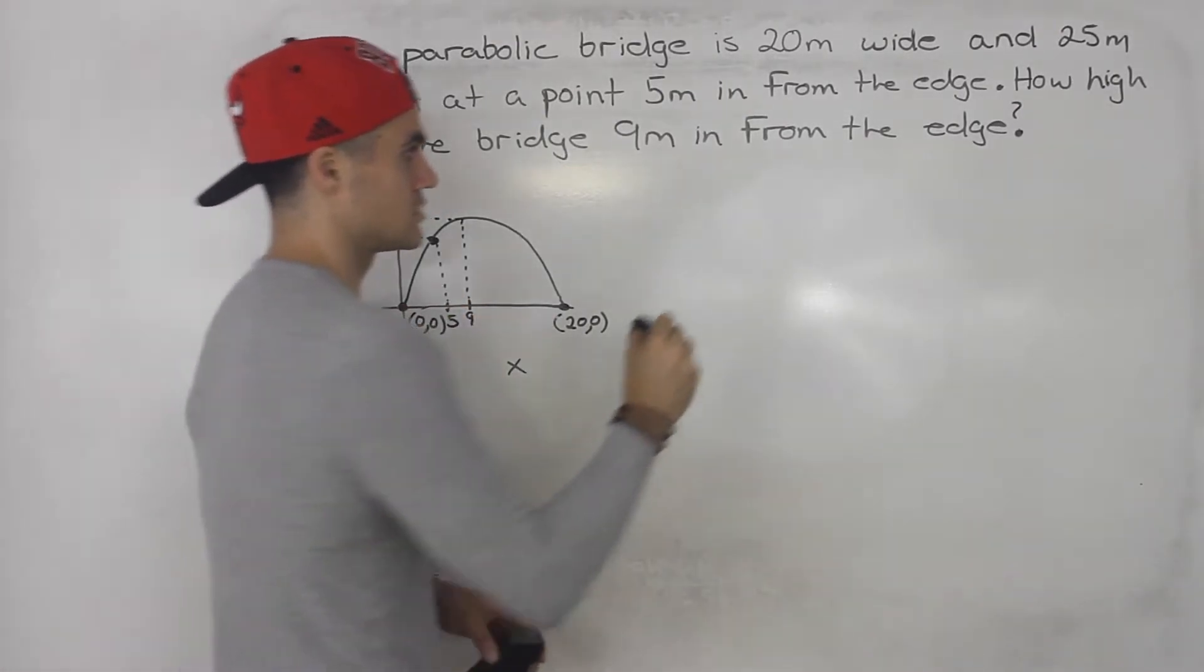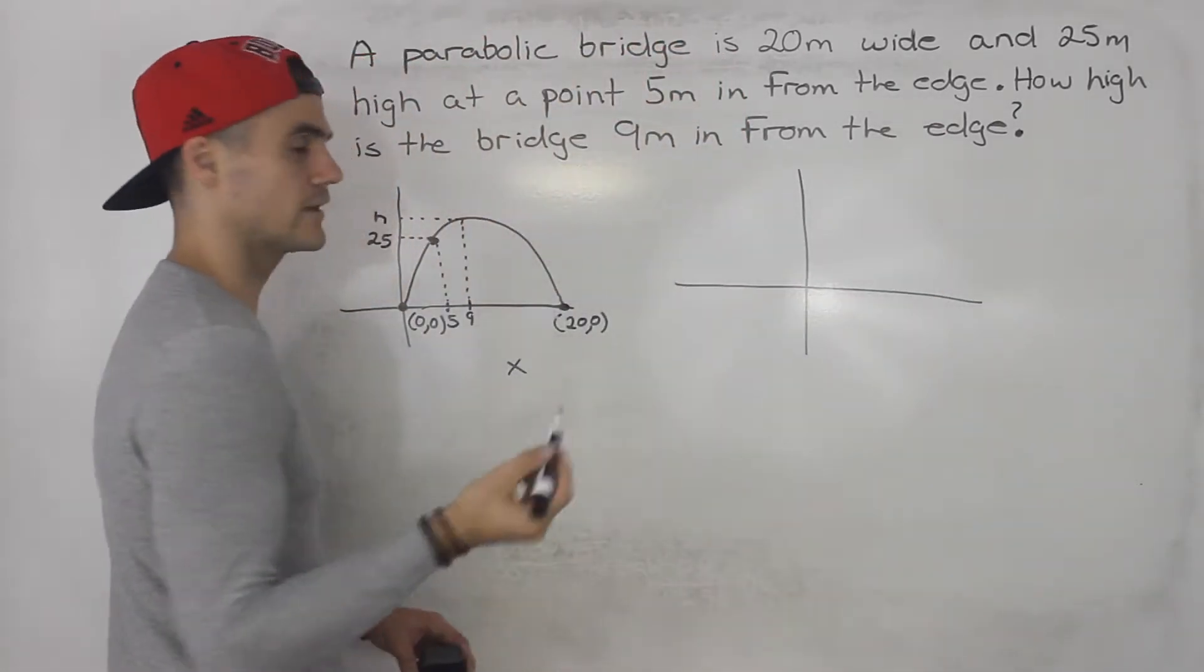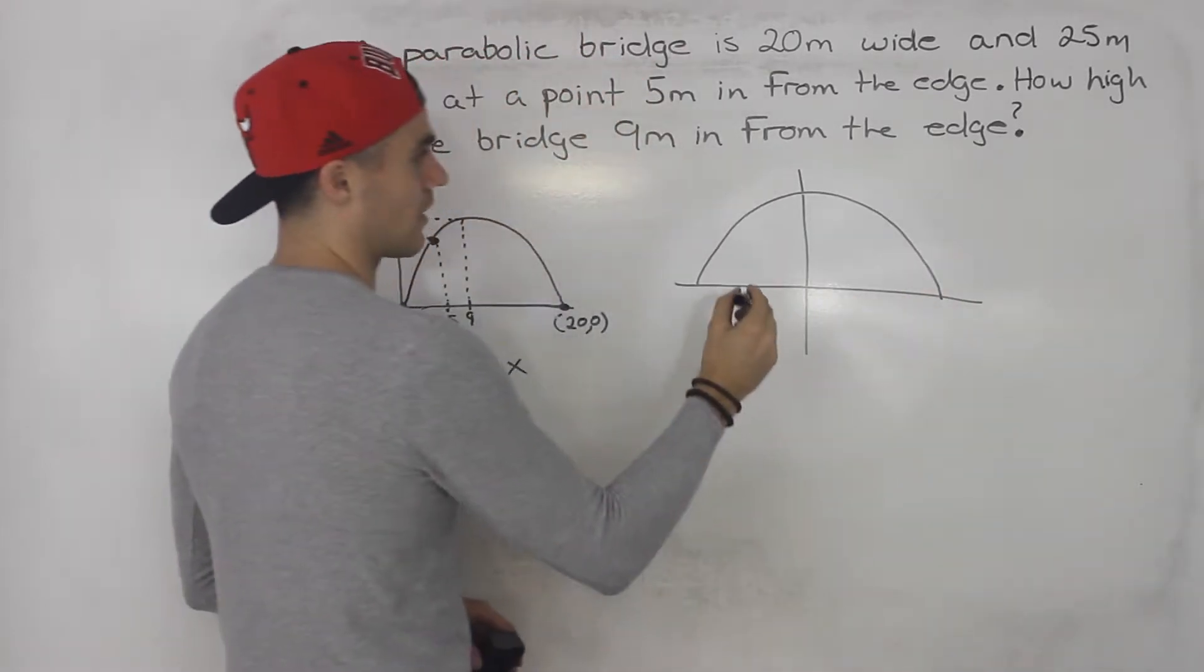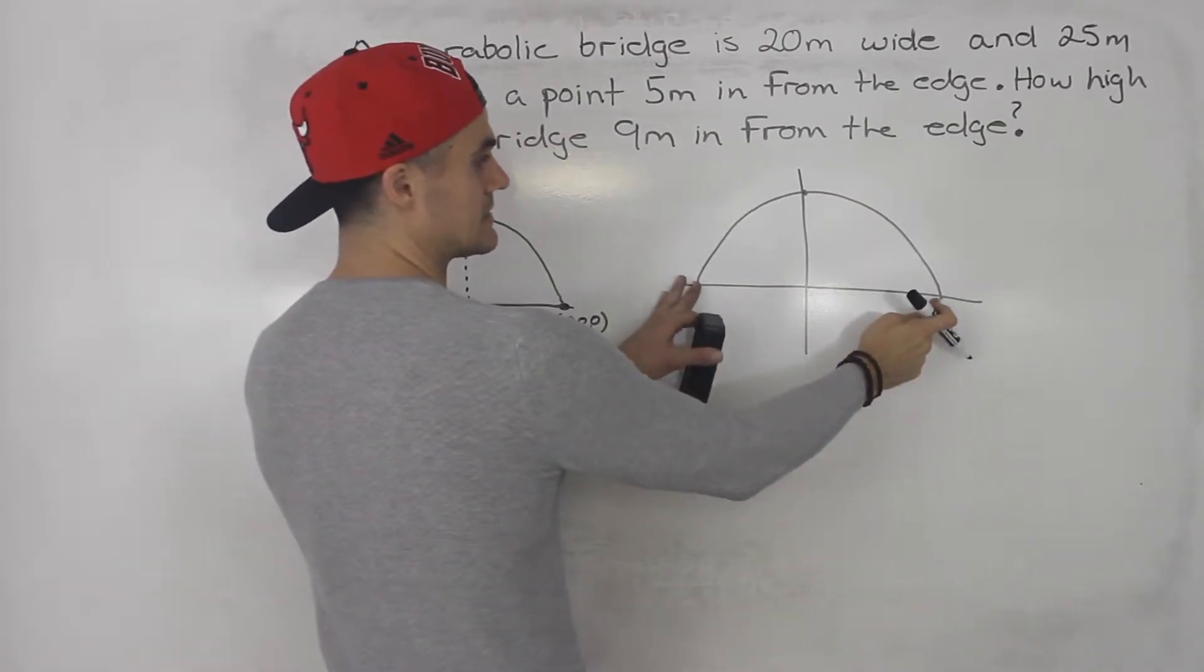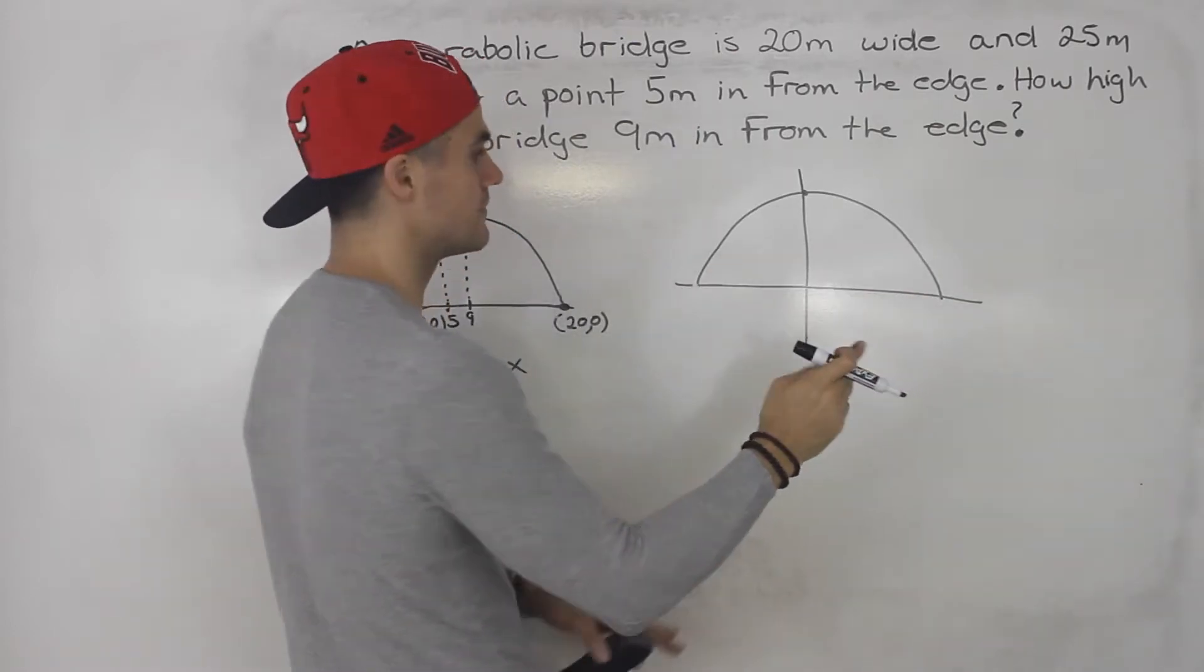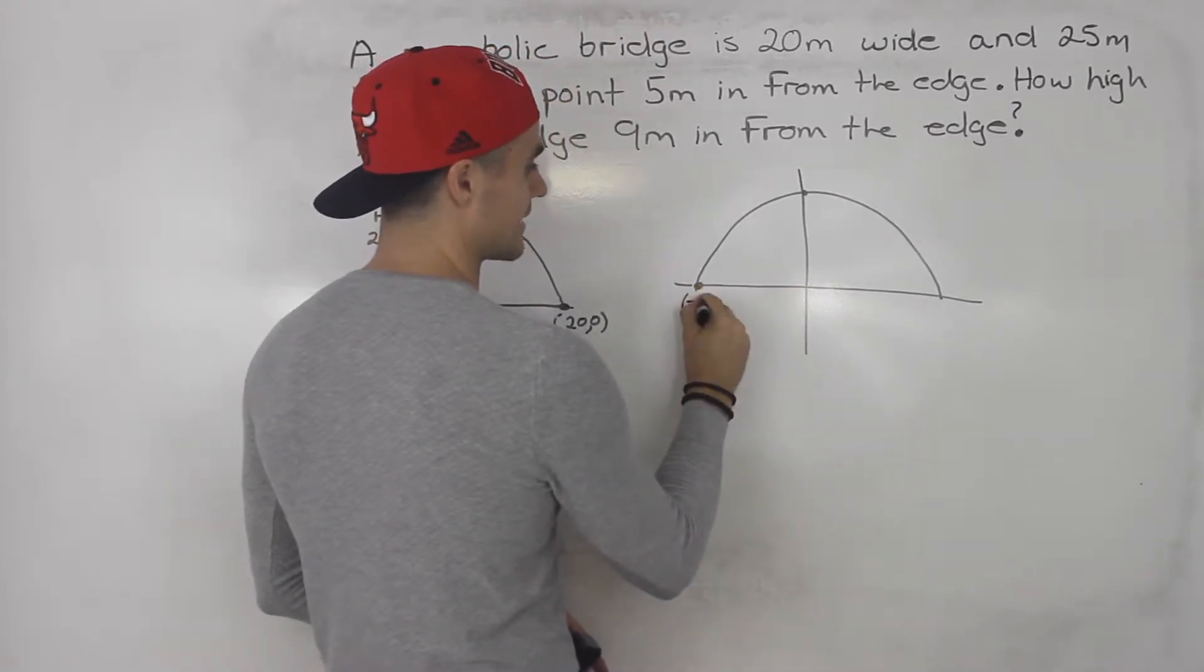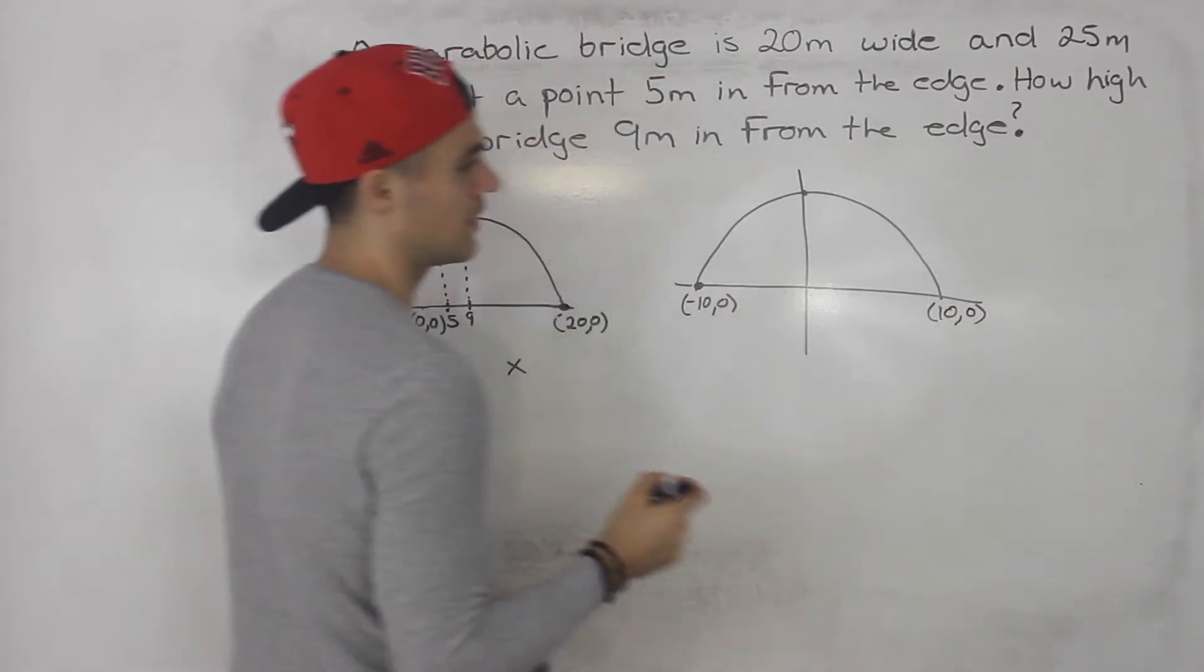Another way to draw this diagram - I don't like to do it this way personally, I usually like to do it this way - but another way you can do it is you could draw like this, where the middle, that max, is on the y-axis. So because this has a distance of 20, it's 20 meters wide, and this is the midway point, then we know that this point here, this distance is going to be 10. So this is going to be negative 10 and 0, and this is going to be 10 and 0, positive 10 and 0.